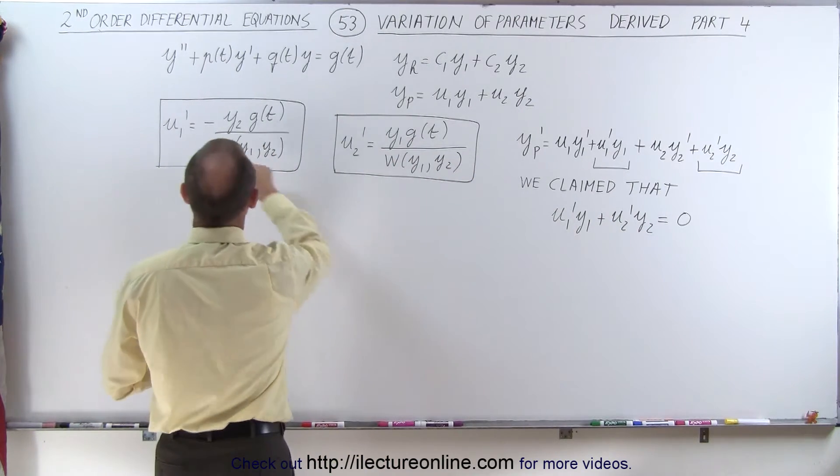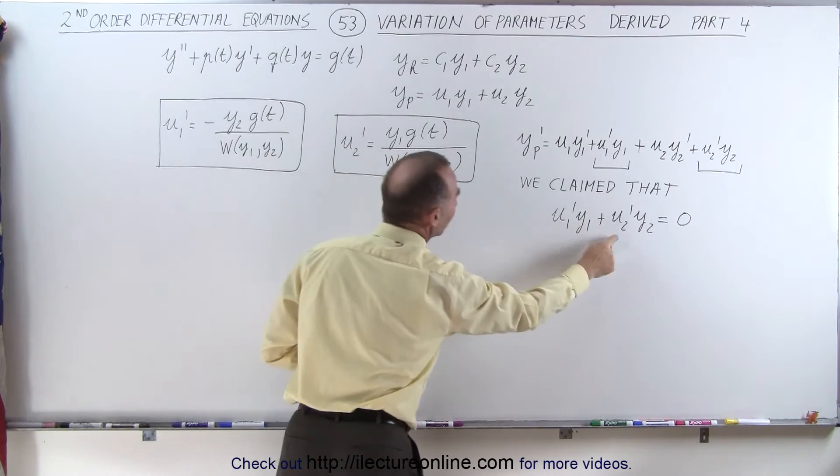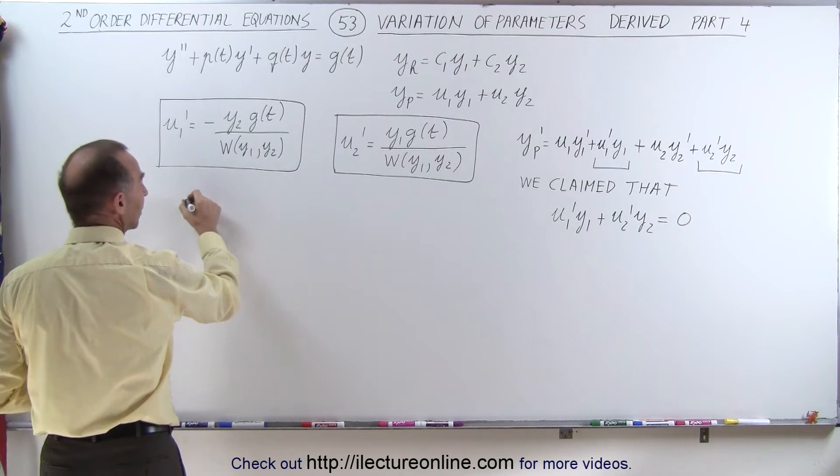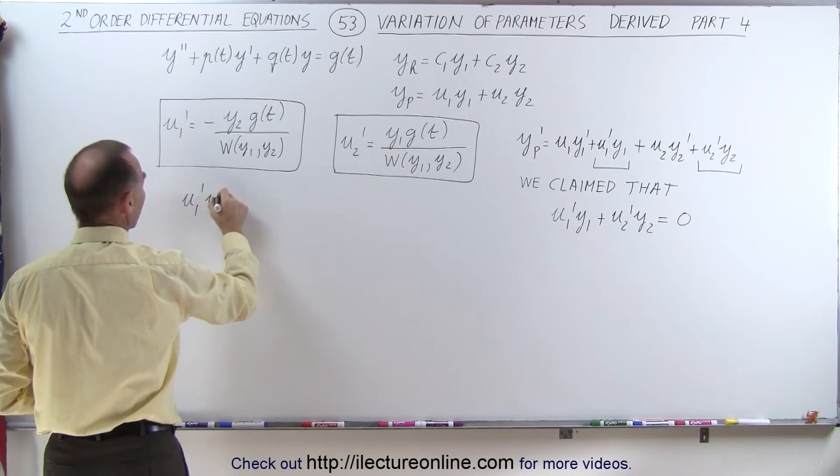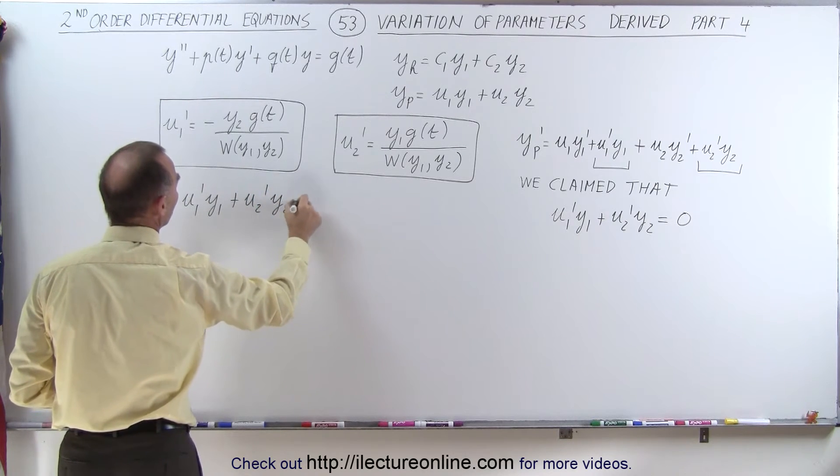So let's go ahead and plug in u1 prime into here, and u2 prime into there, and see what we get. Right over here we have u1 prime y1 plus u2 prime y2, claiming it's equal to zero.